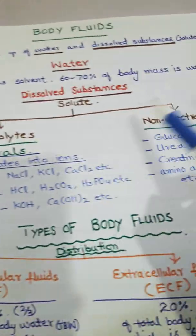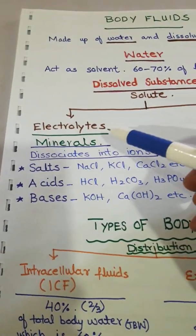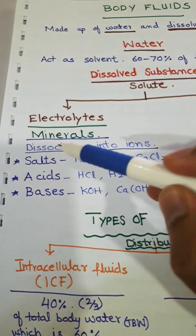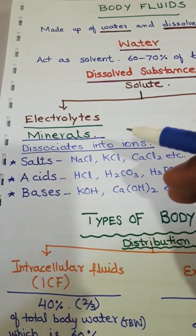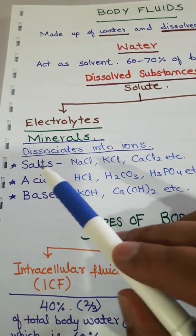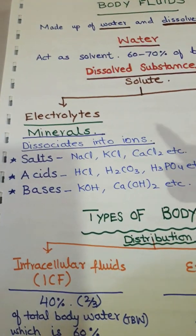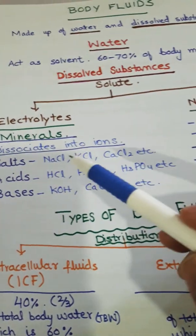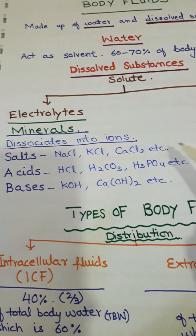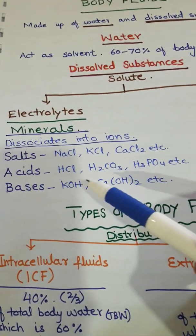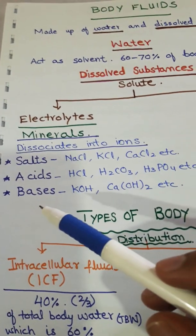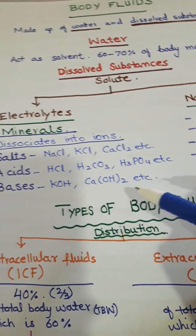The dissolved substances can be divided into electrolytes and non-electrolytes. Electrolytes are minerals — substances which dissociate into positive or negative ions. Examples include salts such as sodium chloride, potassium chloride, and calcium chloride; acids like hydrochloric acid, carbonic acid, and phosphoric acid, which are present inside living organisms.